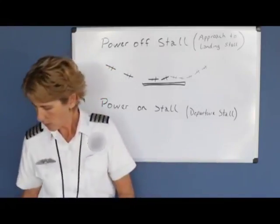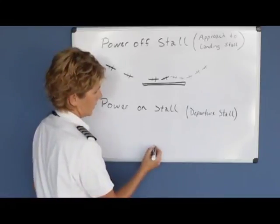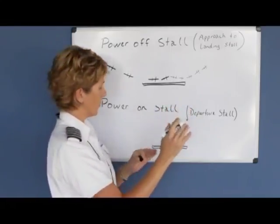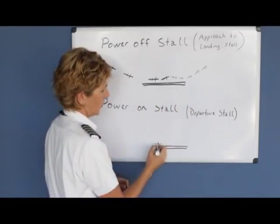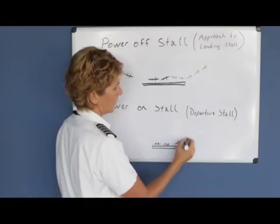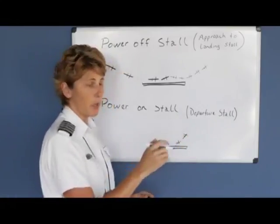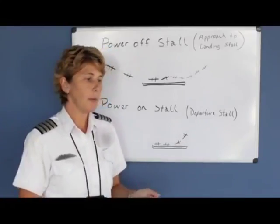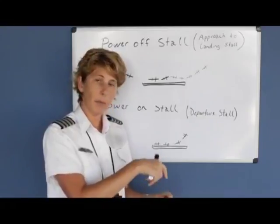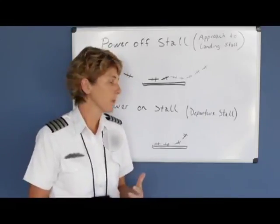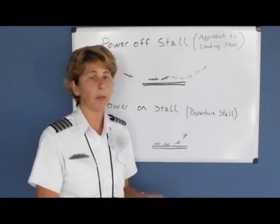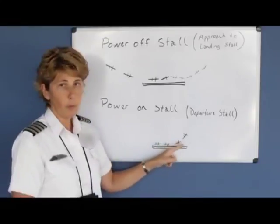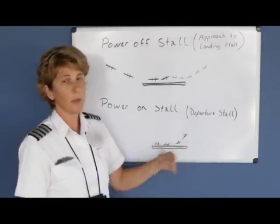The power on stall is to simulate that on departure you pitched up too much for one reason or another. You went down the runway, and when you rotated, for whatever reason, the plane pitched up too much. This may have been because your load shifted, your seat track wasn't pegged properly and the seat slid backwards, or maybe you just didn't have the plane trimmed properly and it over-pitched on takeoff. So the power on stall — also referred to as a departure stall — would have had full power.